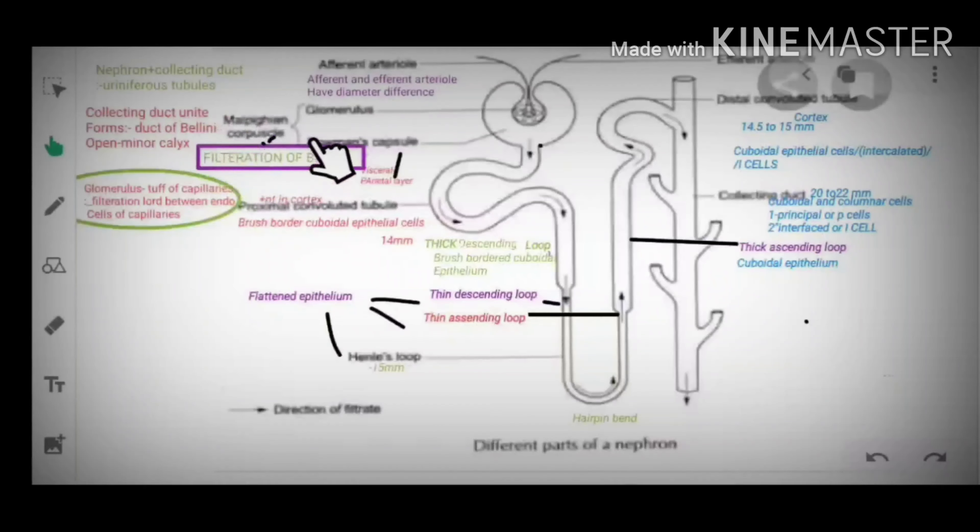The Malpighian corpuscles consists of glomerulus and Bowman's capsule. Glomerulus is a tuft of capillaries present between afferent arteriole and efferent arteriole and is enclosed by the Bowman's capsule.